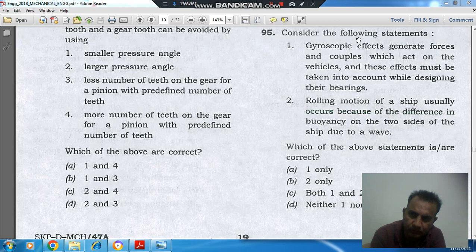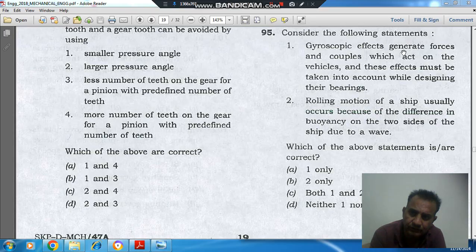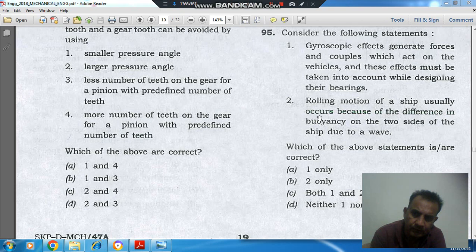Consider the following statements: 1. Gyroscopic effects generate forces and couples which act on the vehicle and these effects must be taken into account while designing their bearings. 2. Rolling motion of a ship usually occurs because of the difference in buoyancy on the two sides of the ship due to a wave. Which of the above statements are correct?